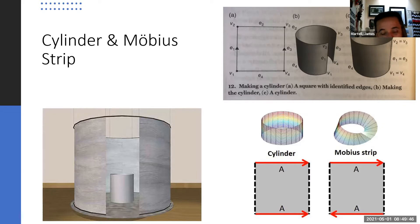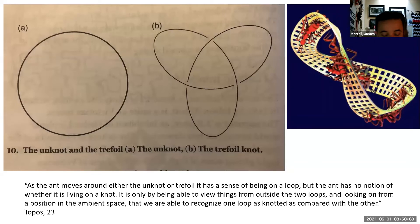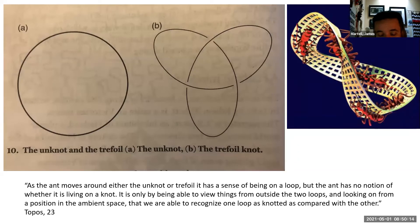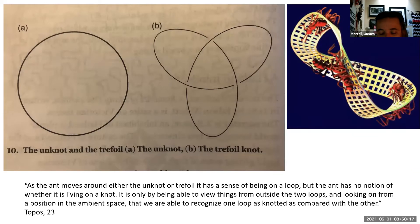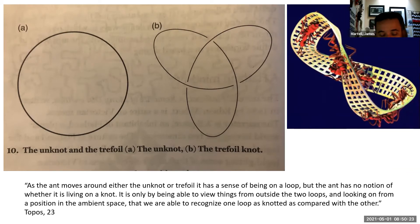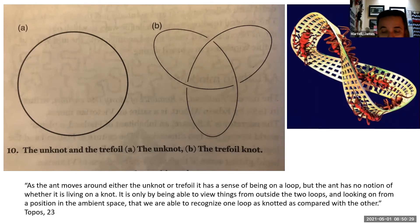It could be that this is the lesson and resonance of Beckett's surfaces to us now in 2021. As long as we are on this infinite here — on the infinite surface, cylinder, Möbius strip, handkerchief, or Zoom screen — we do not know and we cannot know if this is a worldly circle or a subjective knot. As a mathematician explains it: quote, 'As the ant moves around either the knot or trefoil, it has a sense of being on a loop. But the ant has no notion of whether it is living on a knot. It is only by being able to view things from outside the two loops, and looking on from a position in the ambient space, that we are able to recognize one loop as knotted as compared with the other,' end of quote.